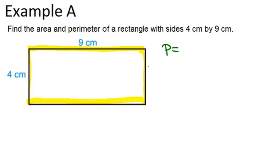it means that the other two sides will also be 4 cm and 9 cm. So the perimeter will just be 4 plus 9 plus 4 plus 9, which is 26 cm.